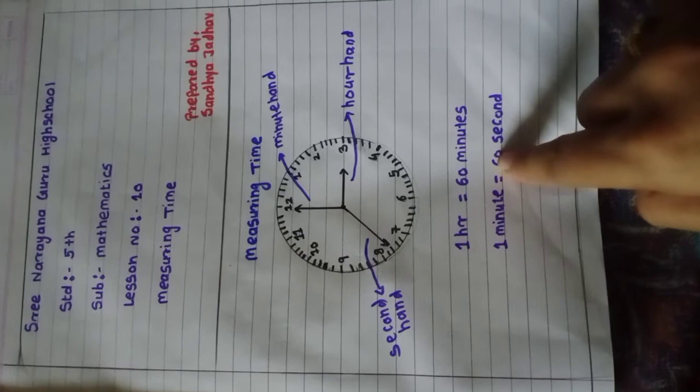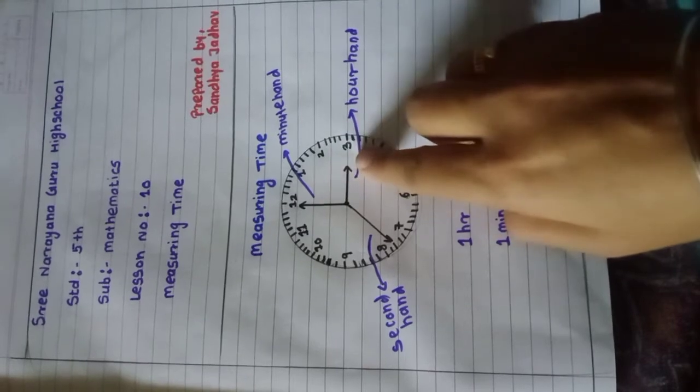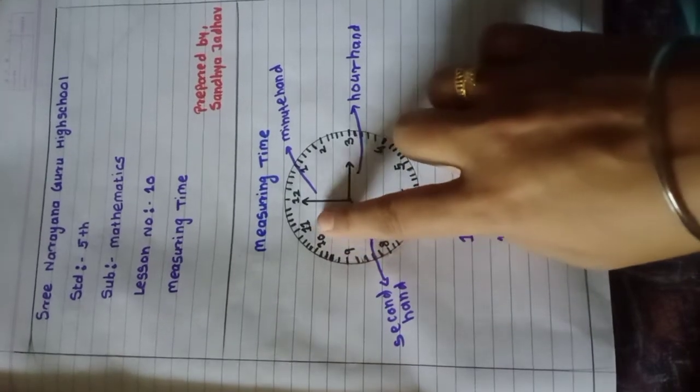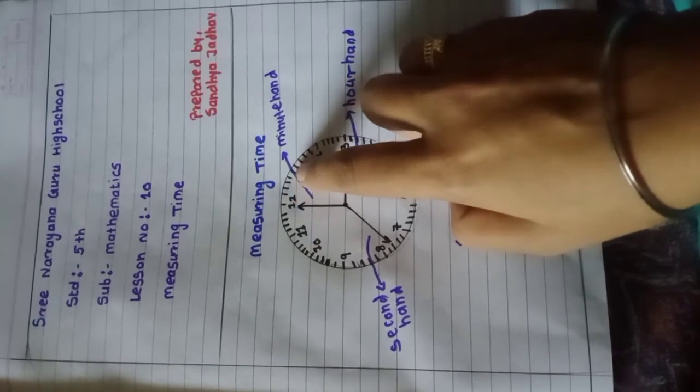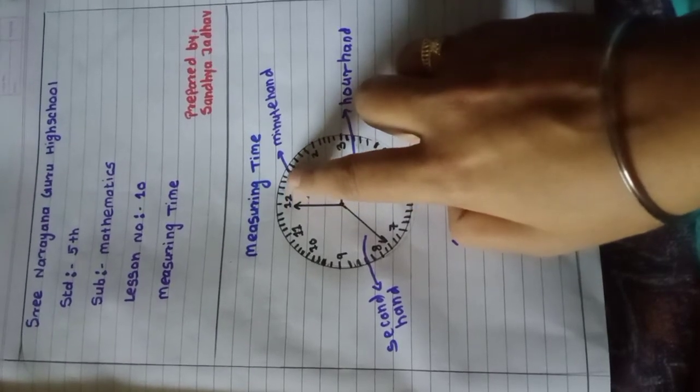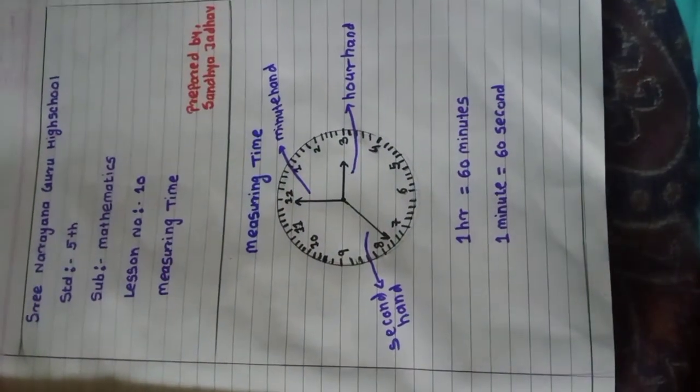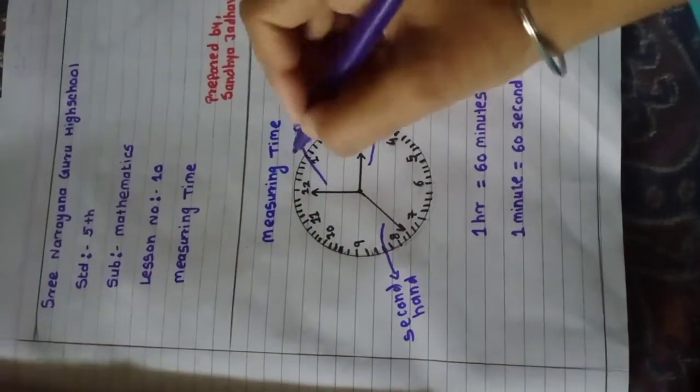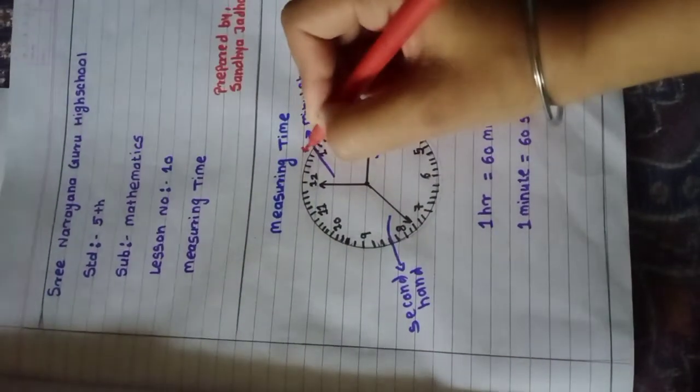And students, you can see in the watch there are some numbers: 12, 1, 2, 3, 4, 5, 6, 7, 8, 9, 10, 11. And between these numbers, you can see the small lines. Between 12 to 1, there are 5 lines: 1, 2, 3, 4, and 5. Each line represents 1 minute. So from 12 till you reach 1, we say that it is 5 minutes.